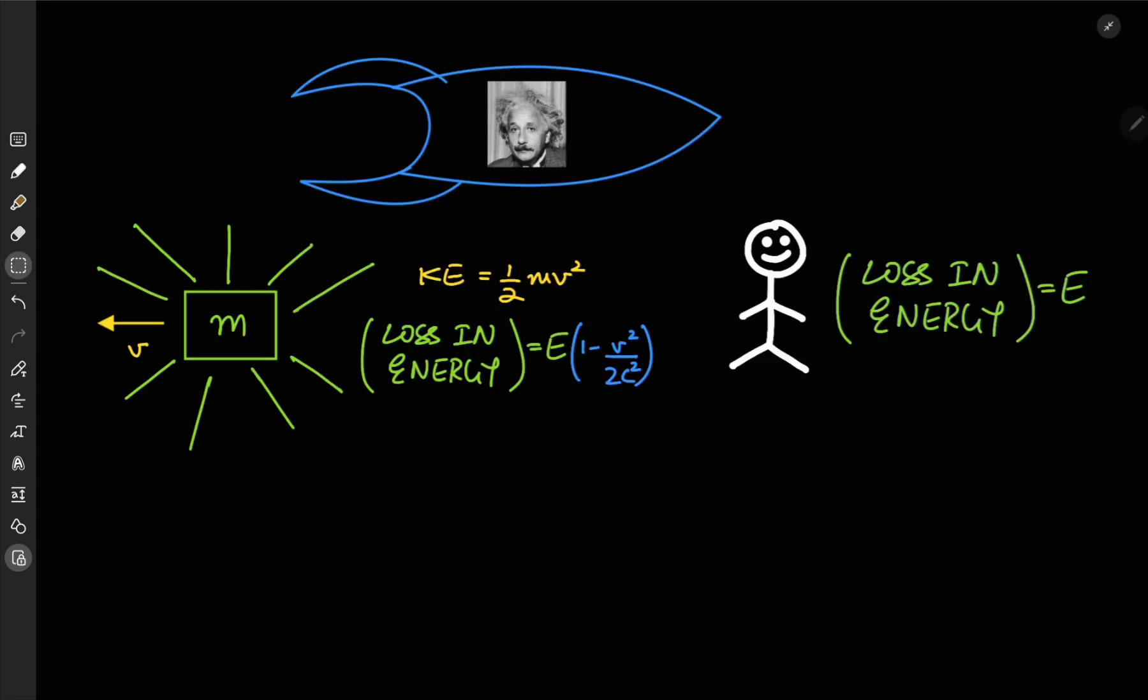So here's a quick recap. Both you and Einstein observe these events from inertial frames of reference. You both agree that the total energy of the box has decreased as a result of emitting that burst of radiation.